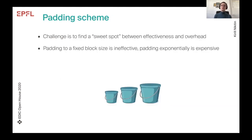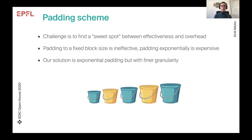The main challenge in designing a padding scheme was finding the sweet spot between effectiveness and overhead. Both previous work and our work showed that padding to a fixed block size is essentially ineffective, but padding exponentially results in high overhead. Our solution was to pad exponentially as a function of size but also introduce finer granularity, achieving the same asymptotic leakage as exponential padding while keeping real-world overhead much lower.